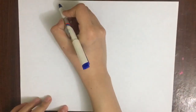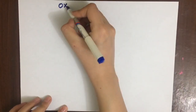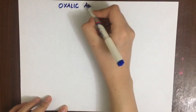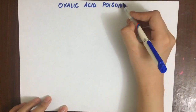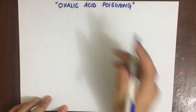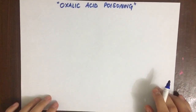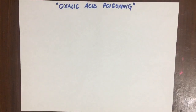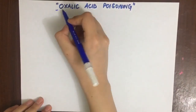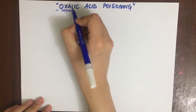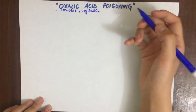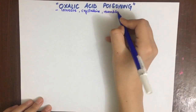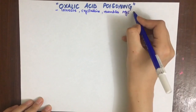In this video we are talking about one of the two important organic acids in toxicology, that is oxalic acid poisoning. Oxalic acid is a corrosive acid; it is crystalline and resembles magnesium sulfate and zinc sulfate in its characteristics, though they both can be differentiated.